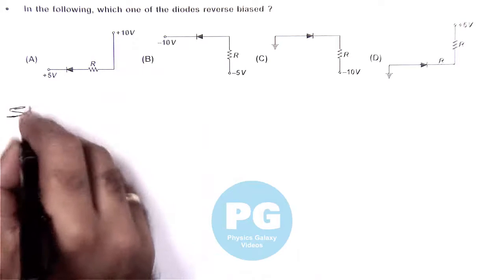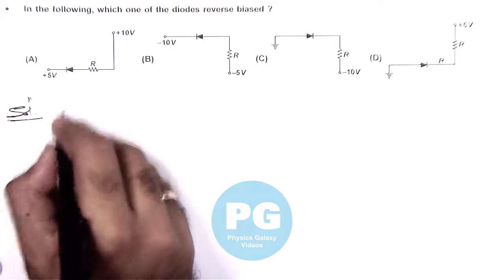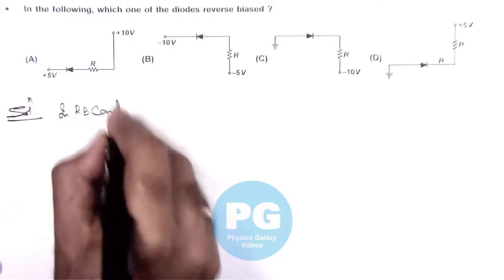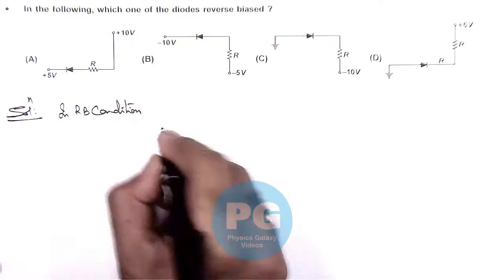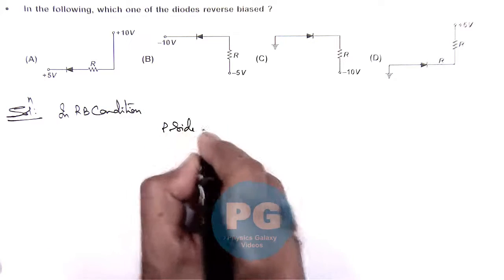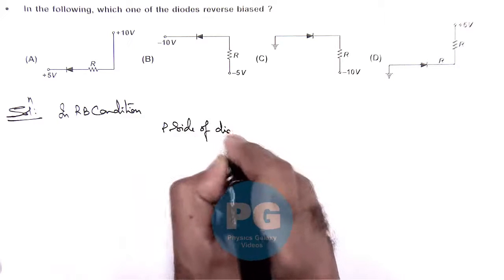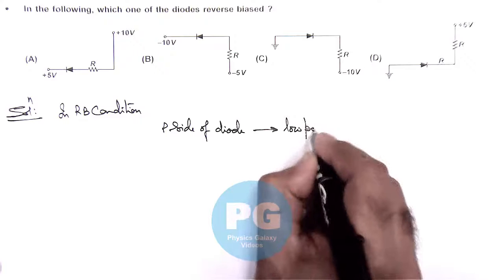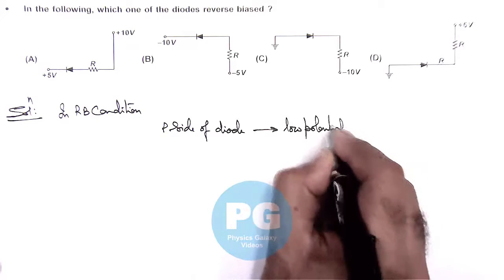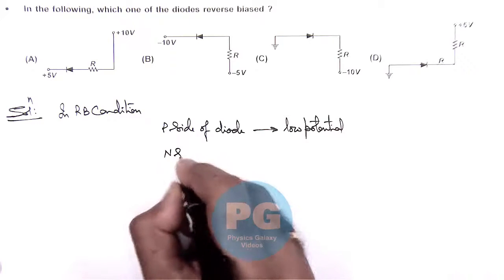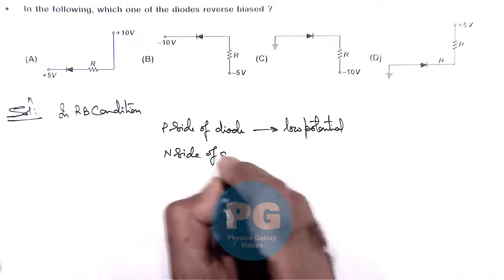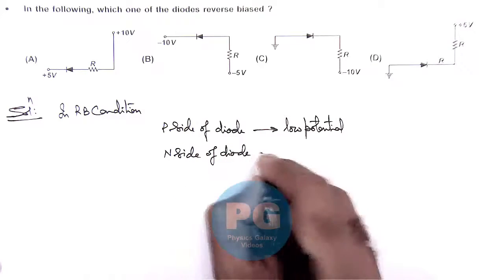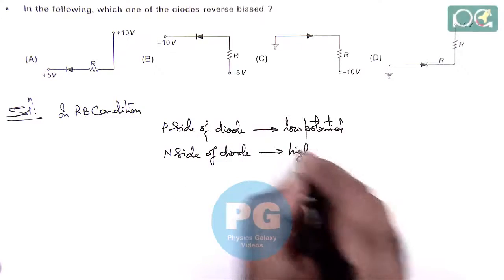So we know well, in reverse biasing condition, the P side of the diode is at low potential and the N side of the diode is kept at high potential.